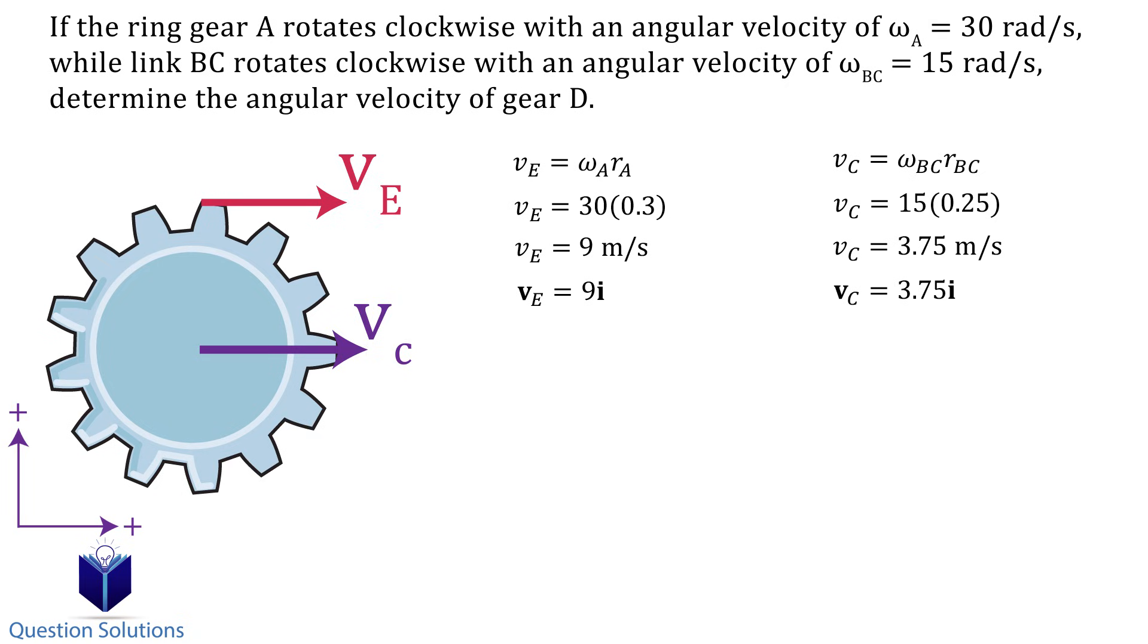To figure out the angular velocity of gear D, we can use the relative velocity equation. Let's plug in the values we know. Now we can do the cross product first, and then we can solve for the angular velocity.